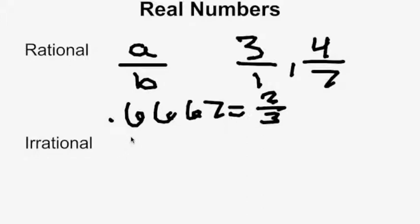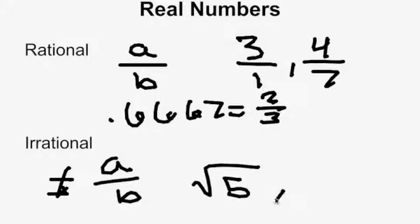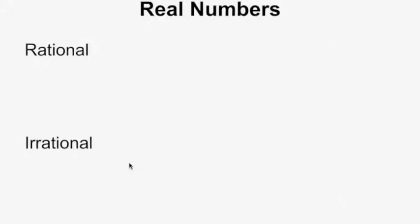However, irrational numbers cannot be put into a over b form. So numbers such as the square root of 5 and pi are irrational.